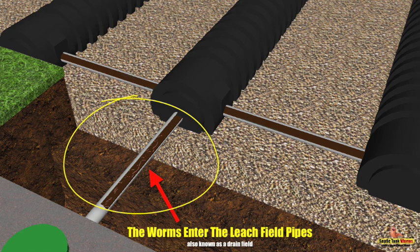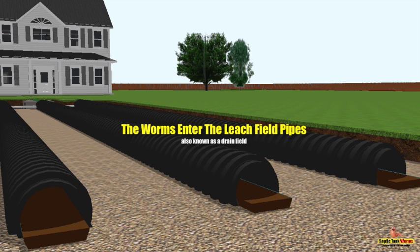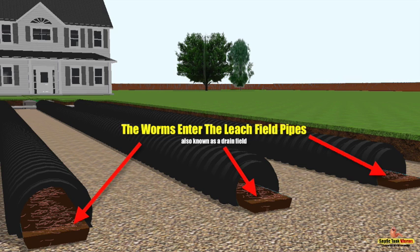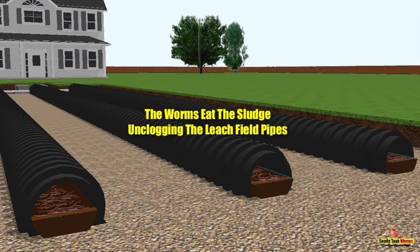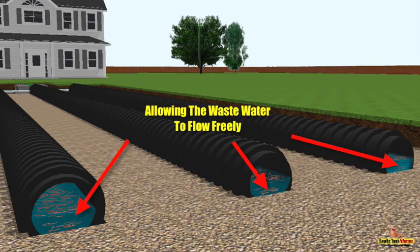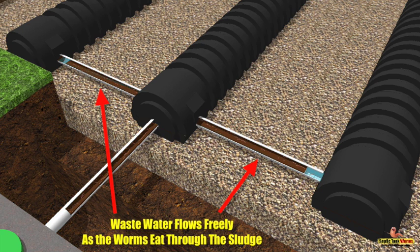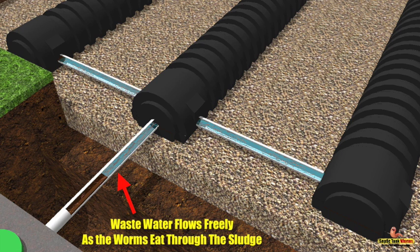As the worms continue to breed and multiply, they make their way through the sludge, deeper and deeper into the drain field. Once the worms have started to saturate the drain field, they start to work their magic. They get to work eating the sludge, unclogging those drain field pipes, which allows wastewater to start flowing freely again. The worms continue eating and breaking down the sludge, clearing and unclogging the drain field pipes, once again allowing wastewater to flow freely into the gravel and naturally into the soil where it can be discharged and disposed of.